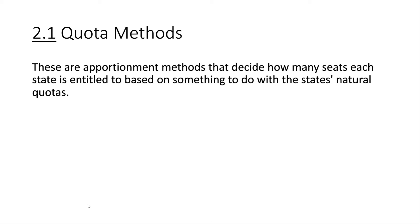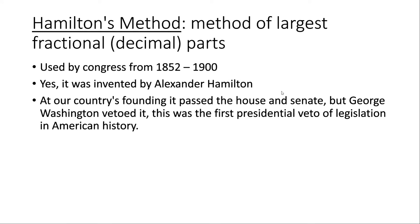In this video we're going to be talking about section 2.1 which focuses on quota methods. These are apportionment methods that decide how many seats each state is entitled to based on the state's natural quotas. The first quota method we're going to look at is Hamilton's method, which is also called the method of largest fractional parts — fractional parts just means the decimal part of a number.